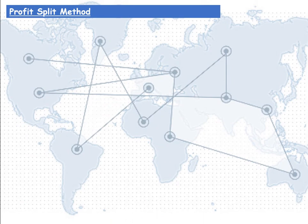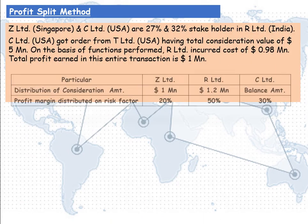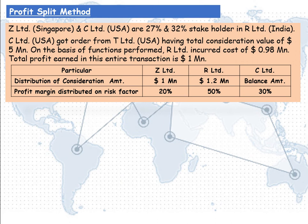Our next method is the Profit Split Method. Z Limited of Singapore and C Limited of USA are 27% and 32% stakeholders in R Limited of India. C Limited of USA got an order from T Limited with a total consideration value of $5,000,000. Based on the function performed, R Limited incurred a cost of $0.98 million. Total profit earned in this entire transaction is $1,000,000. The distribution of the consideration amount: $1 million for Z Limited, $1.2 million for R Limited, and the balance for C Limited. Profit margin distributed on risk factor: 20% for Z Limited, 50% for R Limited, and 30% for C Limited.